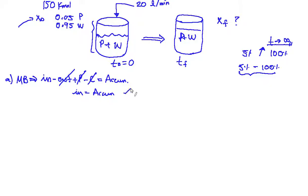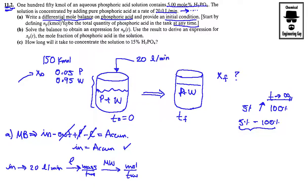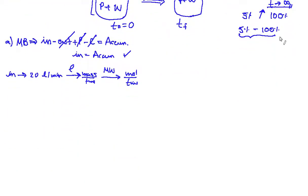Our mass balance gets into a nice form. Let's analyze the inlet — it's 20 liters per minute. We don't like liters, so if we use the density we get mass per time, and if we have the molecular weight we can get moles per time, which is what we want. I want moles because I have everything in moles. They tell you to define NP in kilomoles, so let's do the calculations.